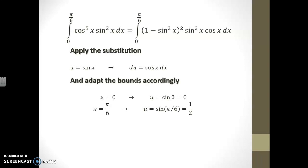The upper bound pi over 6 means that the corresponding value of u is sin of pi over 6, which is a half.